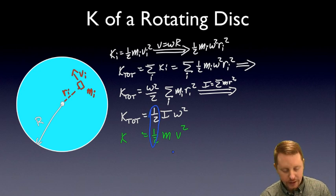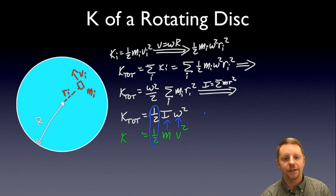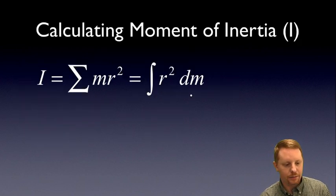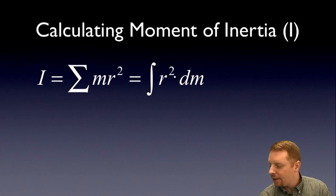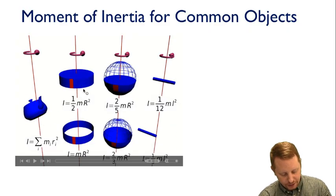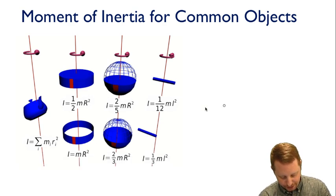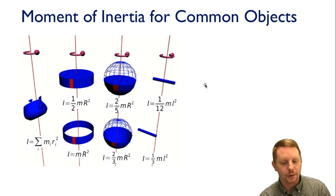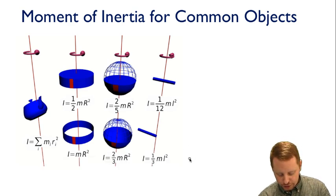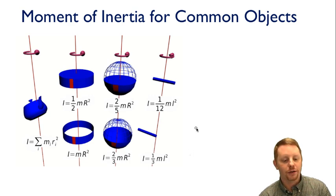Notice how similar that is to translational kinetic energy, one-half m v squared — we go from mass to moment of inertia, and from velocity to rotational velocity. For a set of discrete particles, I equals the sum of m r squared; for a continuous system, it's the integral of r squared dm. For common objects: a disk is one-half m r squared; a hoop is m r squared; a solid sphere is two-fifths m r squared; a hollow sphere is two-thirds m r squared. For a rod rotating about its center it's one-twelfth m L squared, but about its end it becomes one-third m L squared — a larger moment of inertia because the axis is further from the center of mass.